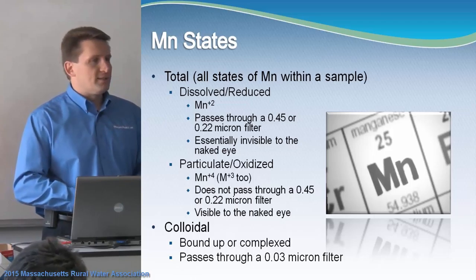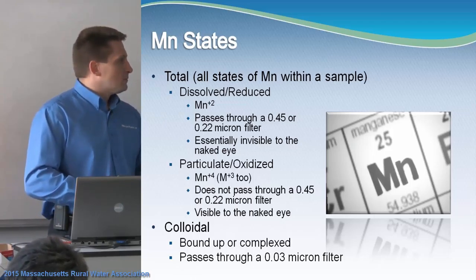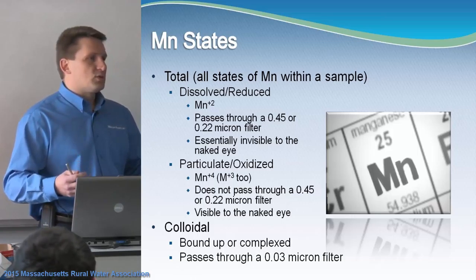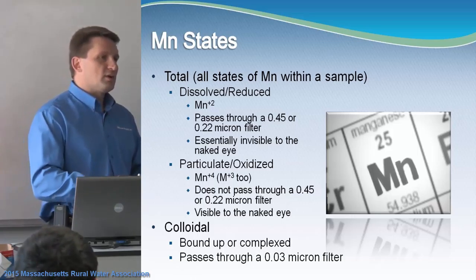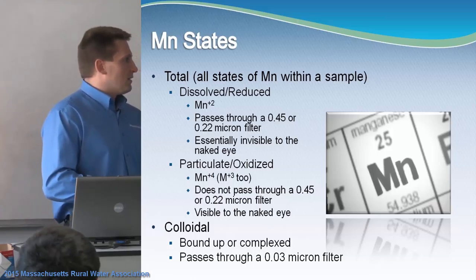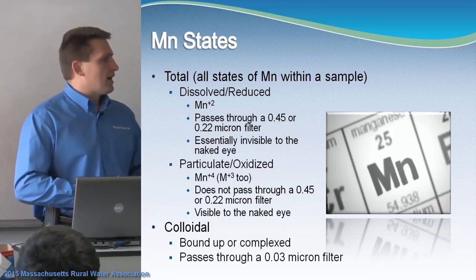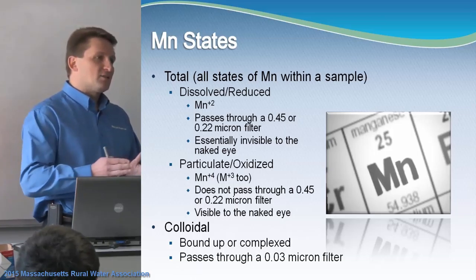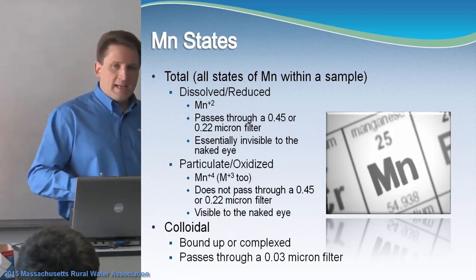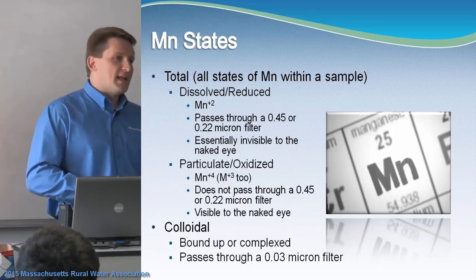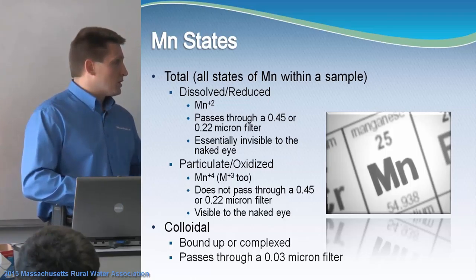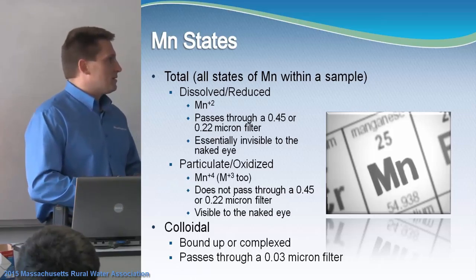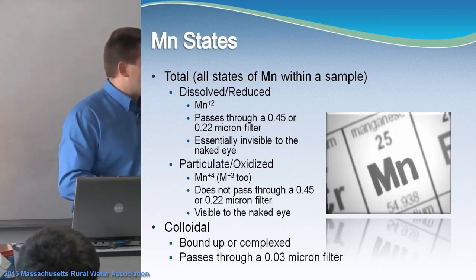The dissolved or reduced state is Mn²⁺. It can actually pass through filters — sometimes you filter a sample to get it to the lab. There are filters of 0.45 to 0.22 microns, and the dissolved manganese will actually pass through those. It's essentially invisible to the naked eye. Currently we're talking on the atomic scale. When manganese is in the plus-two state, you can't really see it until it gets oxidized.